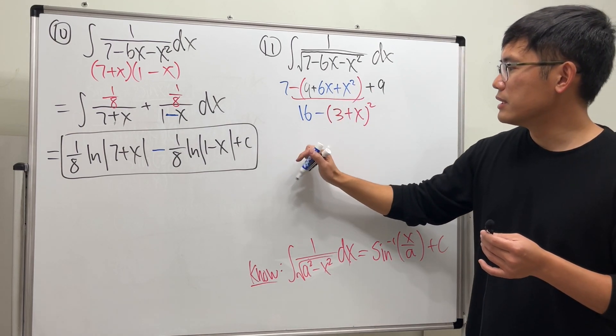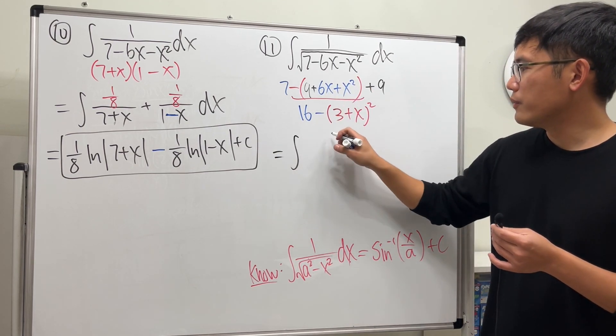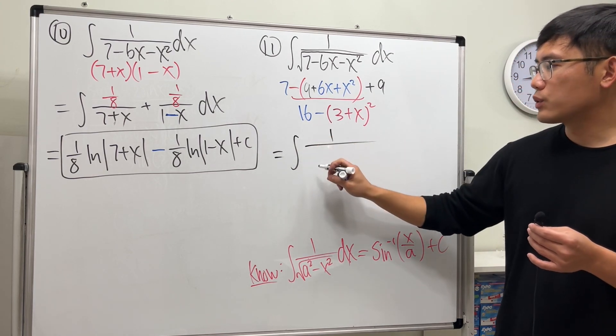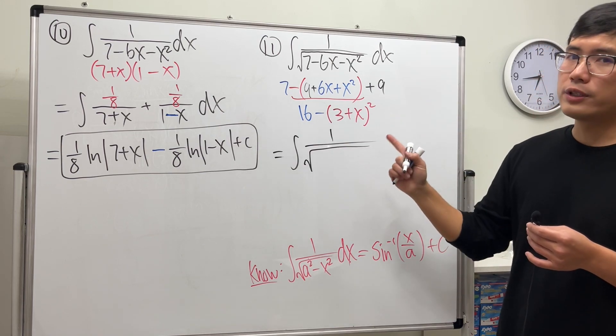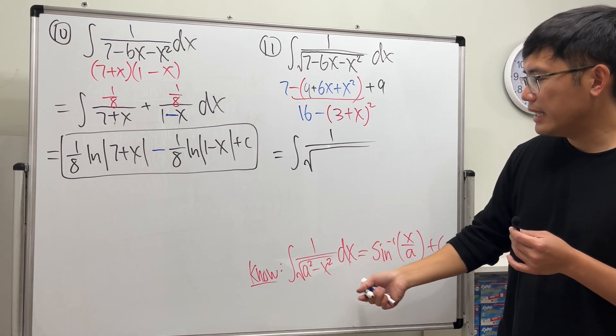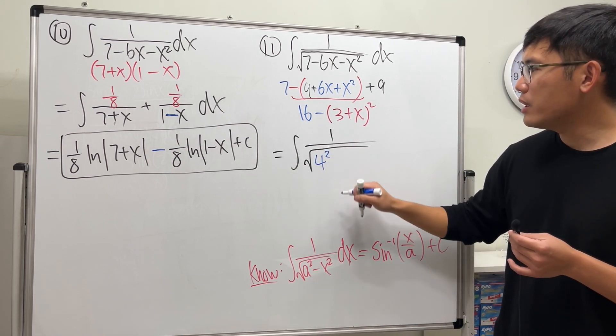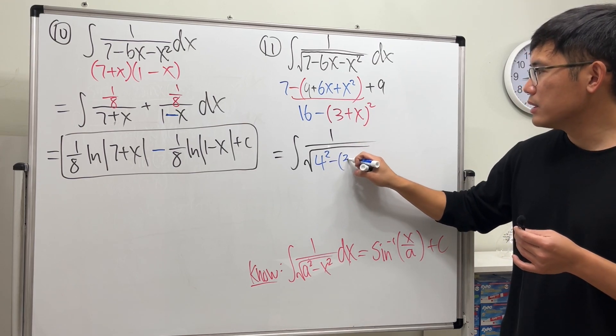This integral is the same as integral of 1 over square root. We have 16, which is the same as 4 squared, because we need to look at this as a square. So 4 squared and then minus parentheses 3 plus x, and then square.